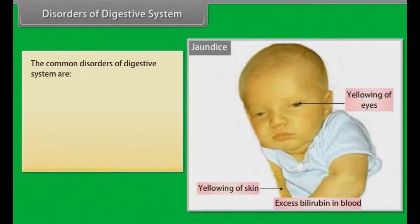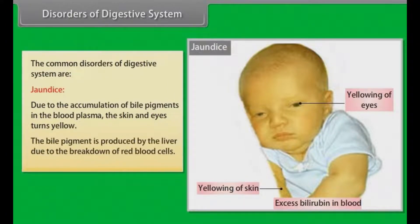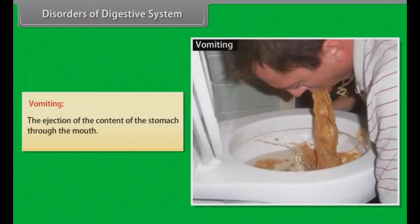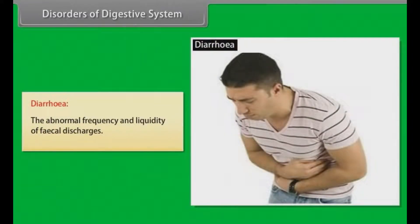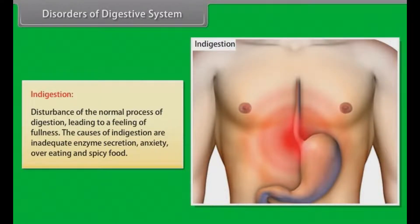Disorders of the digestive system. Common disorders include: jaundice, where due to accumulation of bile pigments in the blood plasma the skin and eyes turn yellow — the bile pigment is produced by the liver due to the breakdown of red blood cells; vomiting, the ejection of stomach contents through the mouth; diarrhea, the abnormal frequency and liquidity of faecal discharges; constipation, difficult evacuation of faecal matter; and indigestion, a disturbance of the normal process of digestion leading to a feeling of fullness, caused by inadequate enzyme secretion, anxiety, overeating and spicy food.